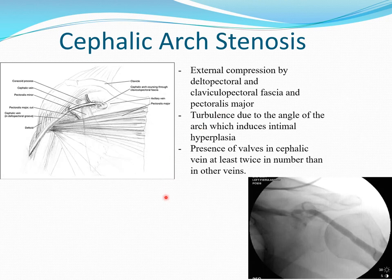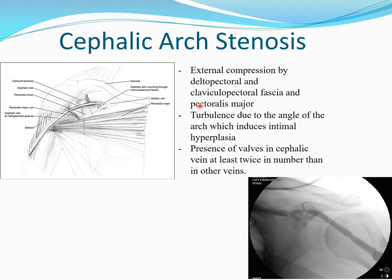One special mention is cephalic arch stenosis. Due to the anatomy of this region, cephalic arch stenosis is very common and sometimes very stubborn. The vein has external compression by deltopectoral and clavicopectoral fascia and pectoralis major, and the angle at which the cephalic arch joins the axillary vein creates turbulence resulting in intimal hyperplasia. Also, there are more valves in this region compared to the rest of the vein. These are some hypotheses for the higher incidence of stenosis here.